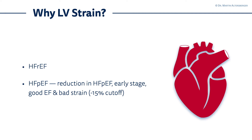In heart failure with preserved ejection fraction you will have a reduction in left ventricular strain in the early stages, especially of HFpEF — heart failure with preserved ejection fraction — where you have a good ejection fraction but bad strain. The cutoff here would be minus 15; below minus 15, the outcomes of the patient with heart failure with preserved ejection fraction are also worse.